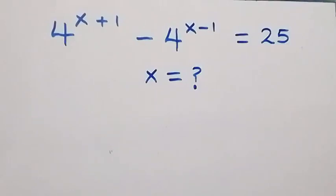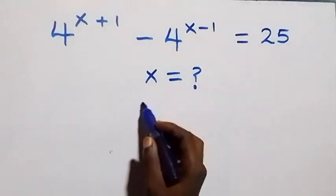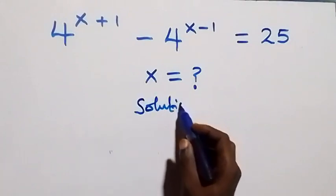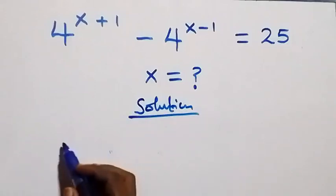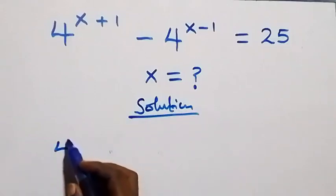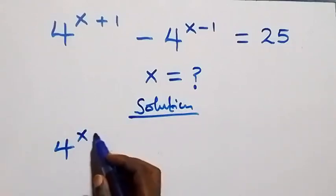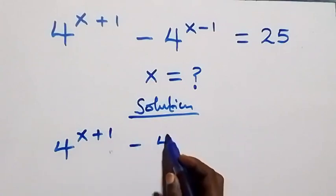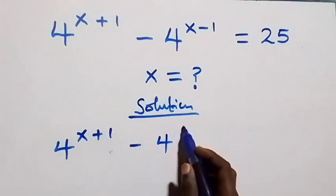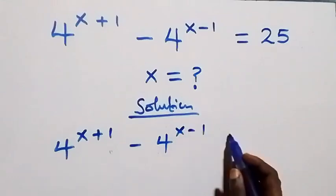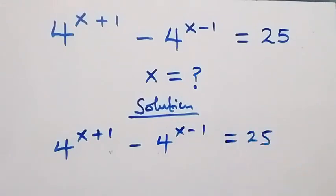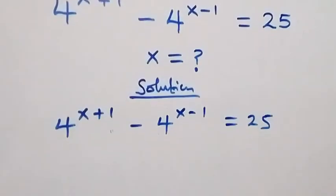Hello, you're welcome. How to solve this nice exponential equation. From what is given, we have four raised to power x plus one minus four raised to power x minus one equals to twenty-five.